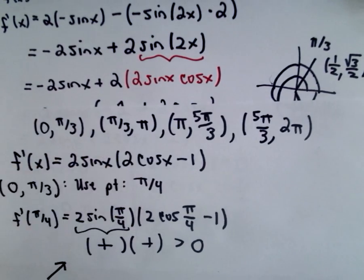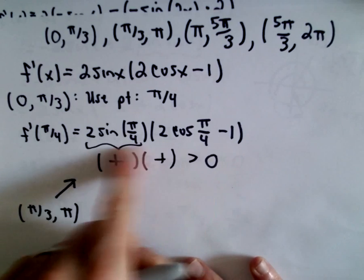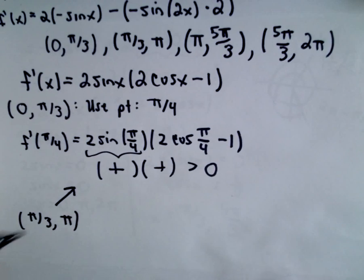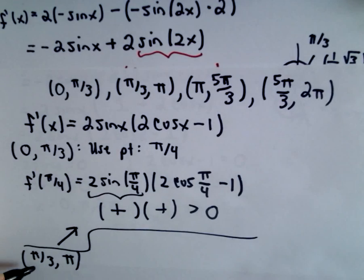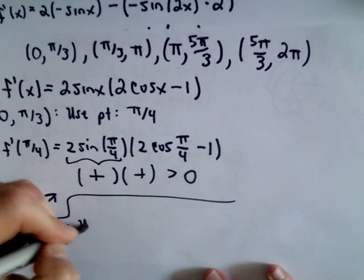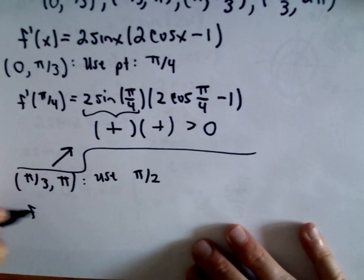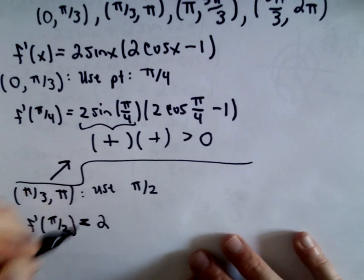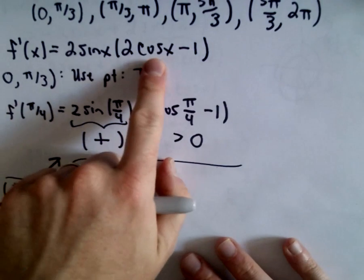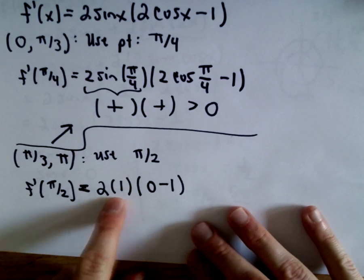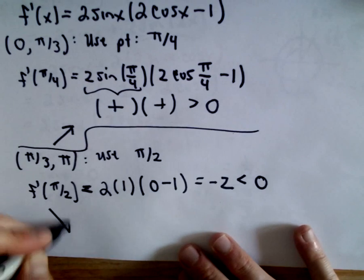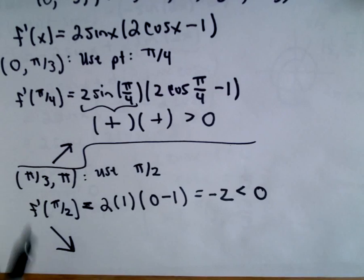On the interval pi over 3 to pi, I'm going to use pi over 2. Substituting in pi over 2: 2 times sine of pi over 2, but sine of pi over 2 equals 1 since I'm at the top of the unit circle. Cosine of pi over 2 is 0, so I'm going to have 2 multiplied by negative 1, giving me negative 2, which is certainly less than 0. So over this interval the function is decreasing.